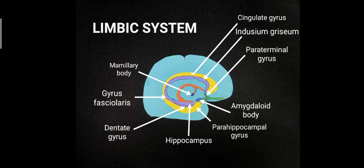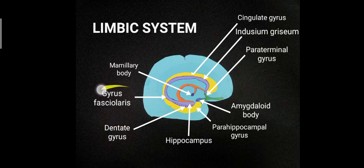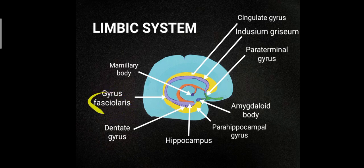In this diagram, we can see the hippocampus, the parahippocampal gyrus, the amygdaloid body, and the dentate gyrus with its toothed appearance. The gyrus fasciolaris is visible posteriorly, continuous with the dentate gyrus. This defines the hippocampal formation.